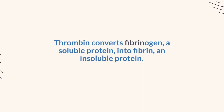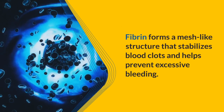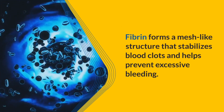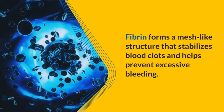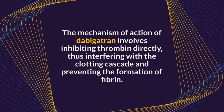Thrombin converts fibrinogen, a soluble protein, into fibrin, an insoluble protein. Fibrin forms a mesh-like structure that stabilizes blood clots and helps prevent excessive bleeding. The mechanism of action of dabigatran involves inhibiting thrombin directly, thus interfering with the clotting cascade and preventing the formation of fibrin.